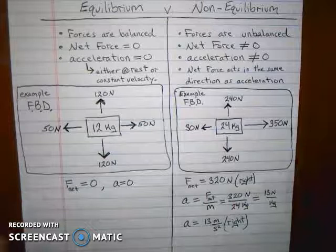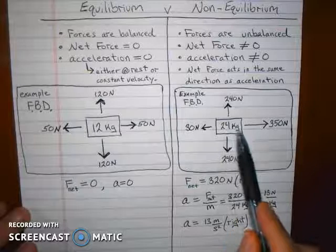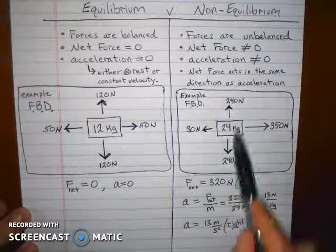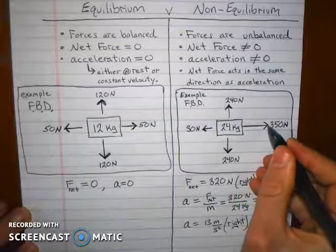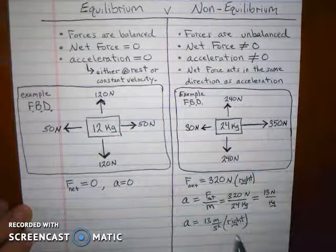So for example, if you have some mass, let's say a 24 kilogram mass, that has 240 newtons pushing down on it and 240 newtons supporting it up, those two forces are balanced up and down so they cancel out. But if you have 350 newtons to the right versus 30 newtons to the left, those are not balanced. You can tell the force acting to the right is much larger, as described by the length of the vector, than the one to the left.